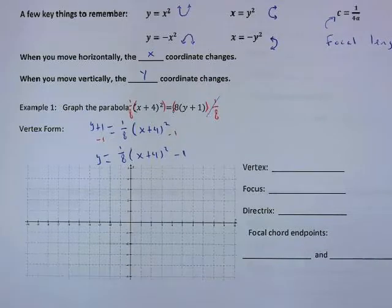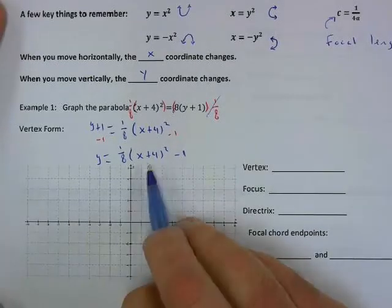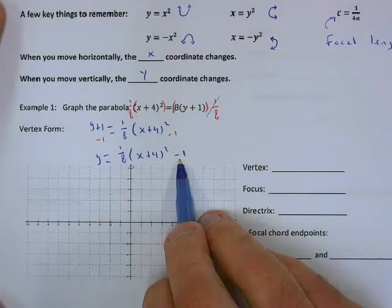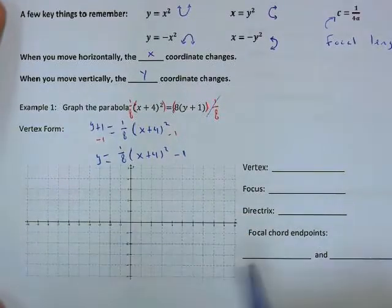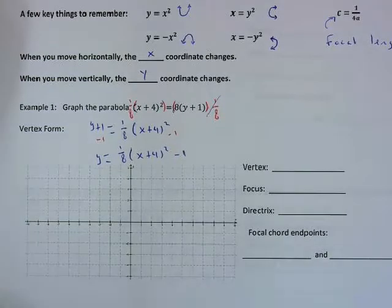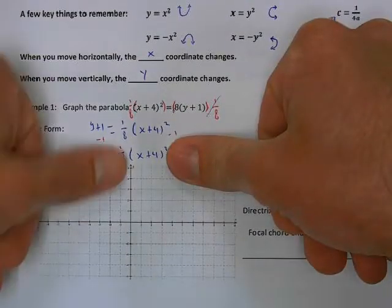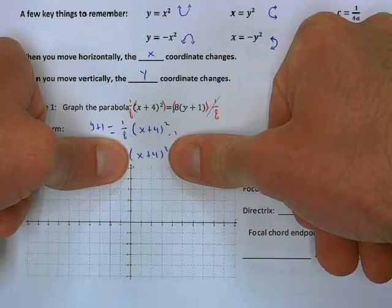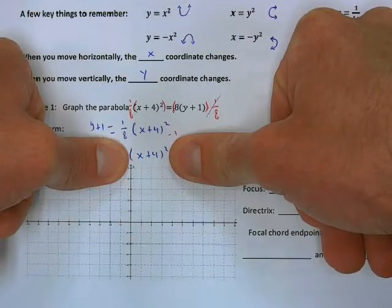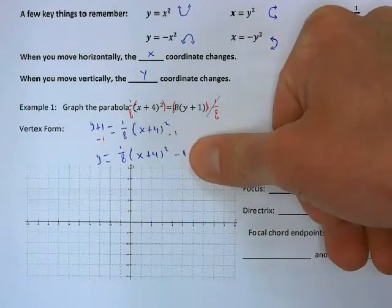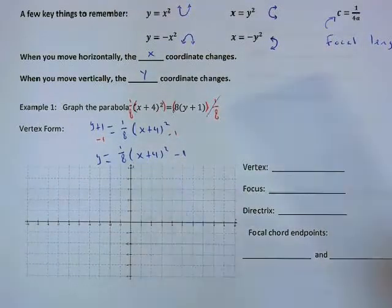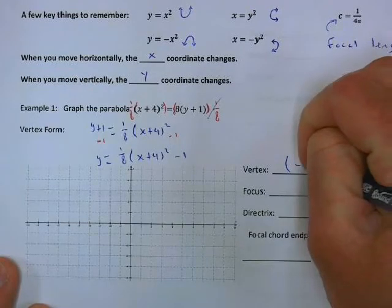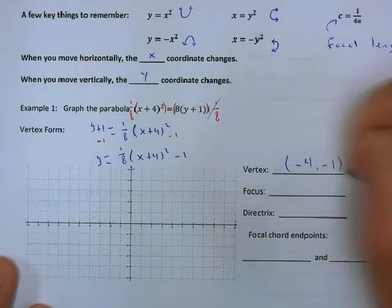Now that we have it in vertex form, what's our vertex? Since we have (x+4), this is shifted left 4, and the minus 1 shifts us down 1 — so the vertex is at (-4, -1). Another way: plug in x = -4 to make the squared part zero. -4 + 4 = 0, squared is 0, times 1/8 is 0, minus 1 is -1. Either way we get vertex (-4, -1).